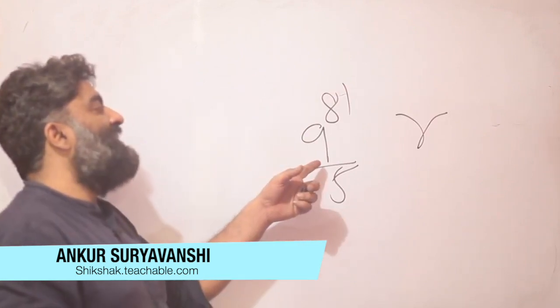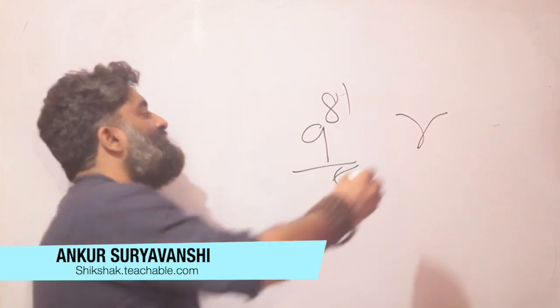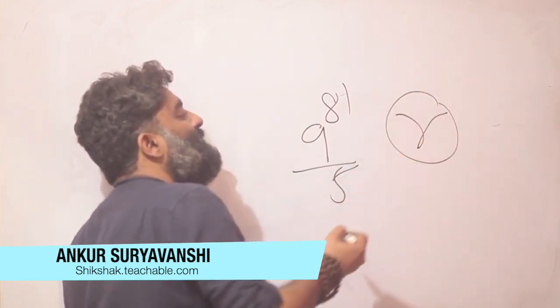So the question would be 9 raised to 81 divided by 5, or any such question, and the question's focus is on the remainder.